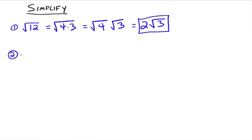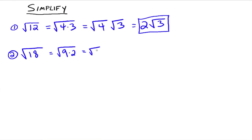Next, the square root of 18. Again, we look for the largest perfect square that divides into 18 evenly — that's 9. So we have the square root of 9 times 2, which becomes the square root of 9 times the square root of 2, which equals 3 times the square root of 2.